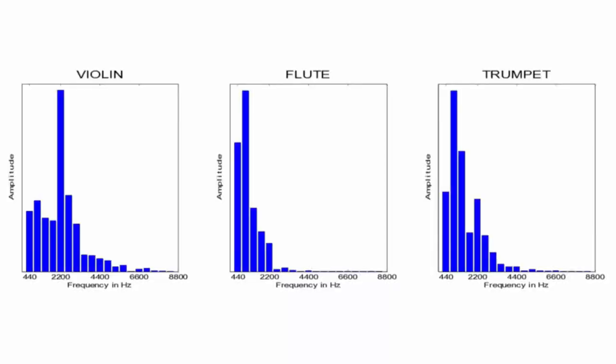You see here the sound spectrogram of three instruments, all playing an A at 440 Hertz. I find interesting that in none of the three examples, the fundamental is the loudest of the harmonics. In the case of the violin, the fifth harmonic is especially prominent.